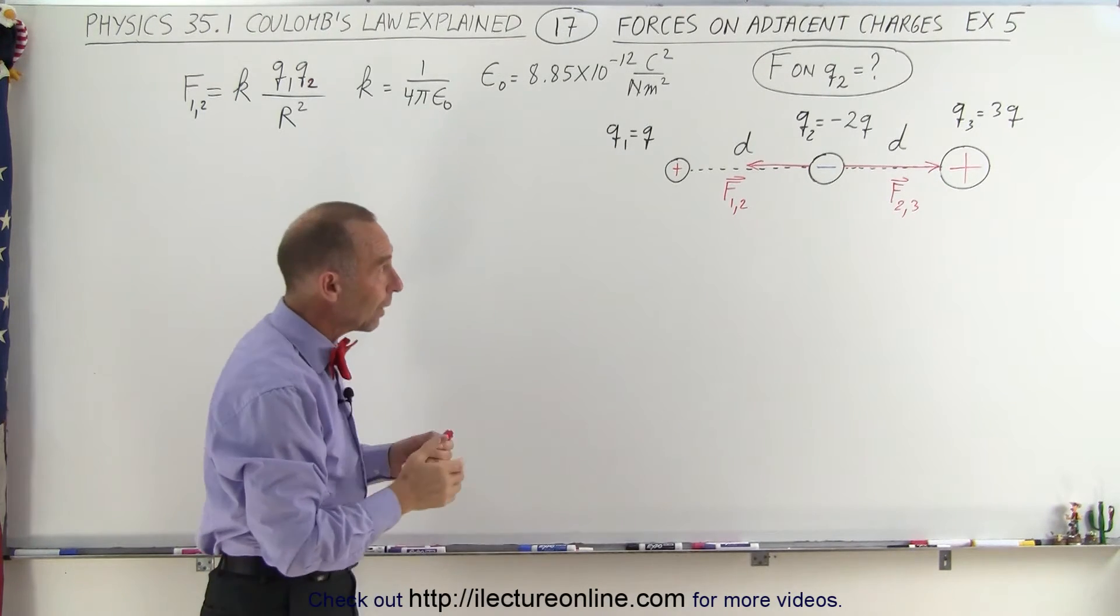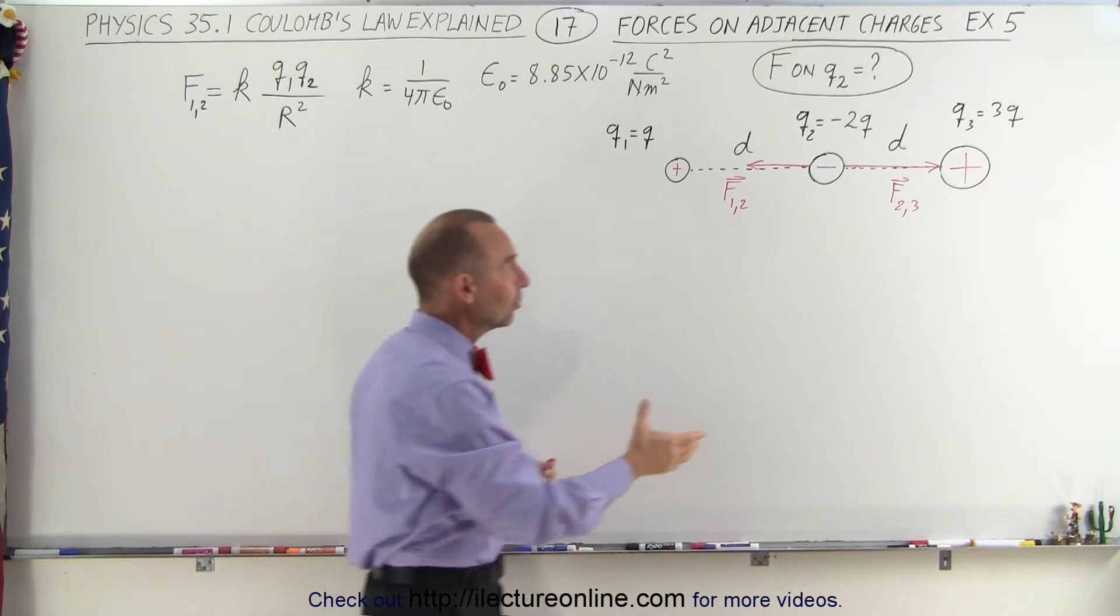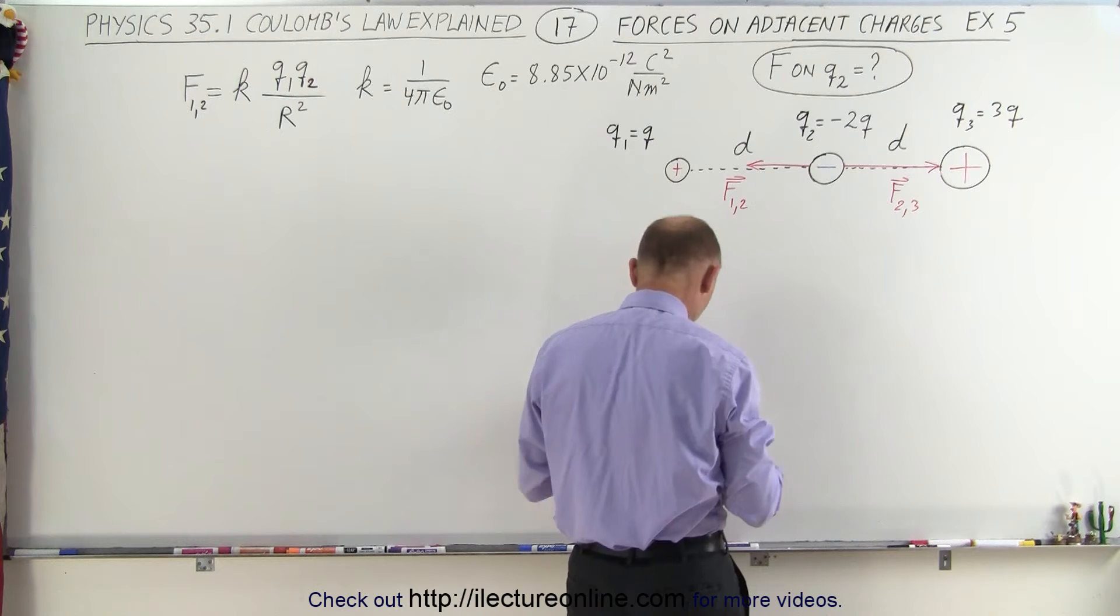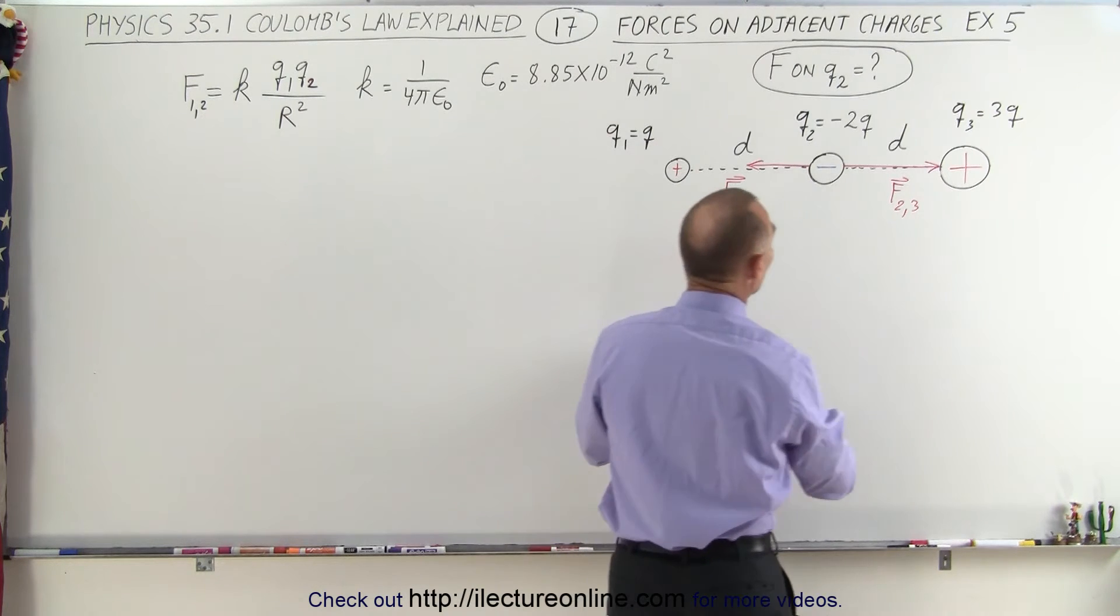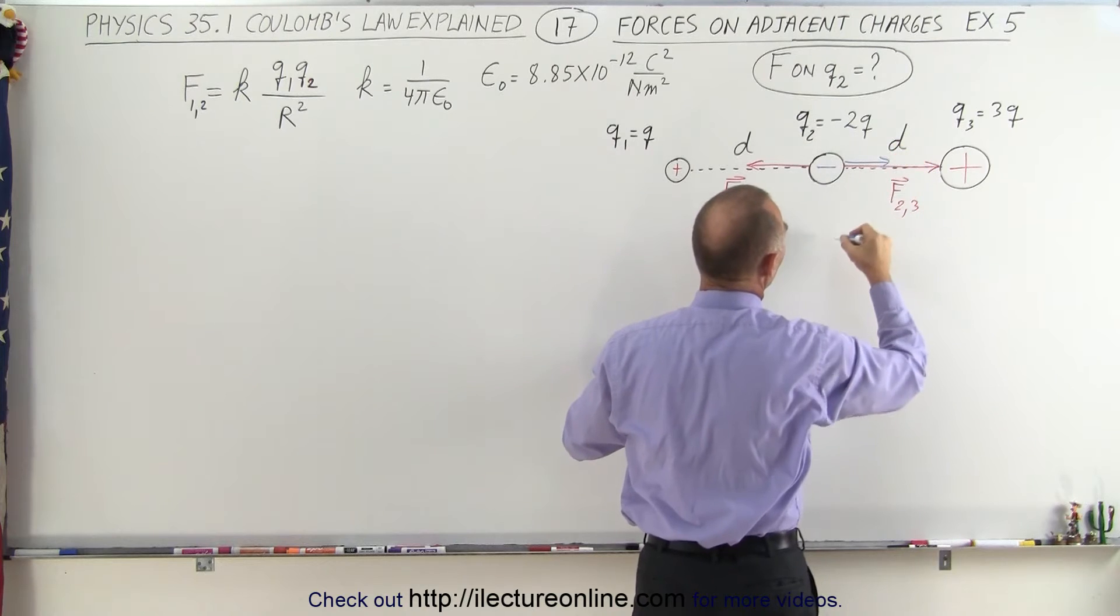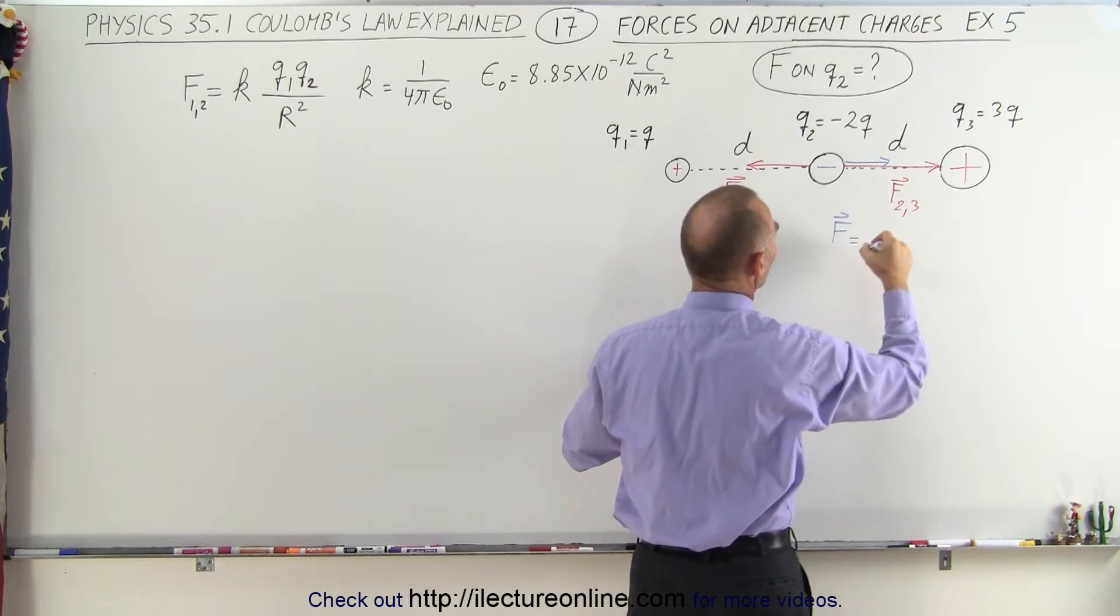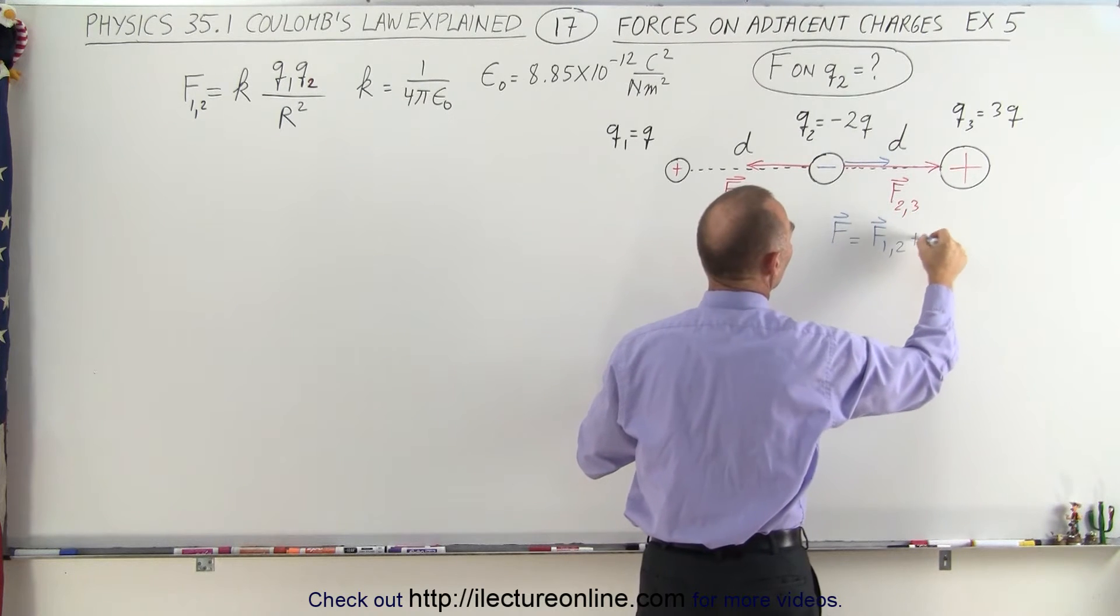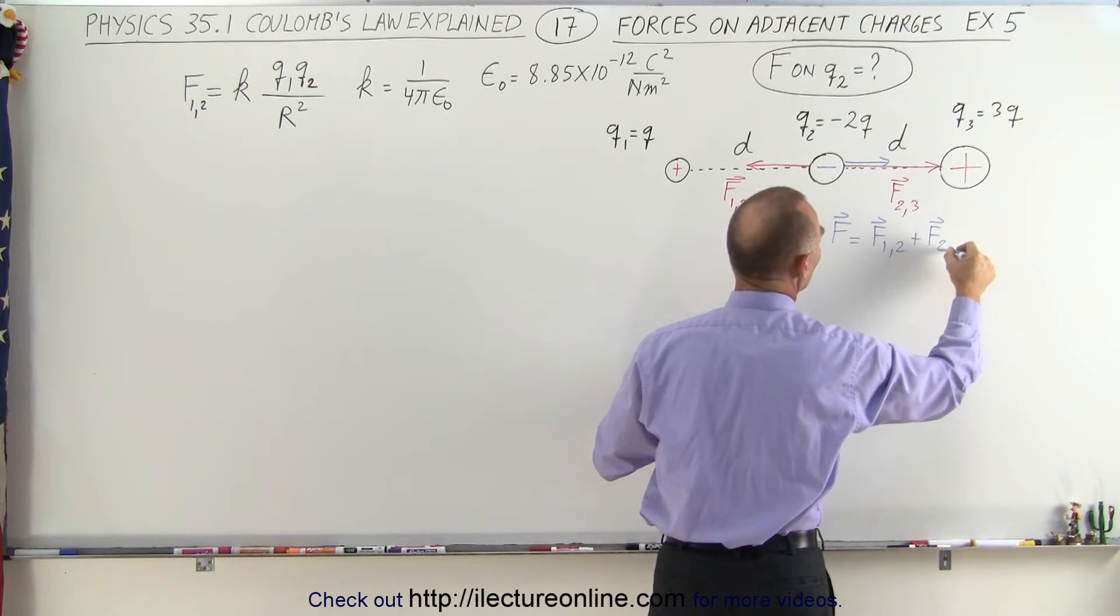When we add the two together, we have to add them vectorially. Notice that F2,3 will be larger in magnitude than F1,2, so the net force will be to the right. The net force, or total force, will simply be the vector sum of F1,2 plus F2,3.